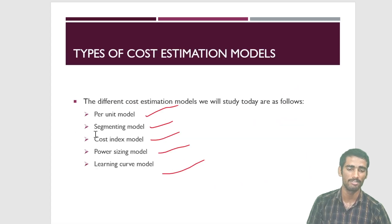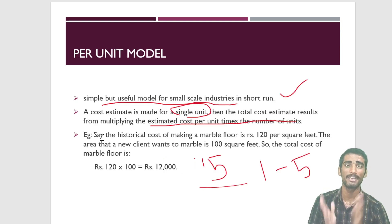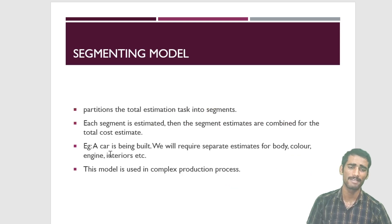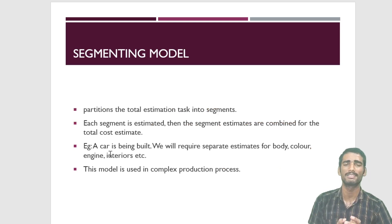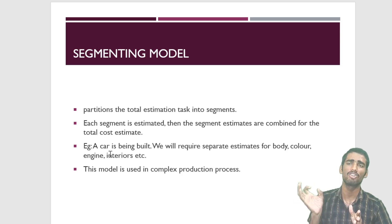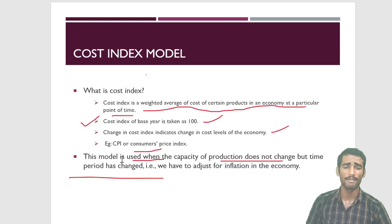There are five types of cost estimation models: per unit, segmenting, cost index, power sizing, and learning curve. The per unit model is similar to the unitary method — find the value of one unit and multiply by the number of units. In the segmenting model, a complete project is divided into segments — like the car industry example where making tires, seats, and engines are separate segments — cost of each segment is calculated and then combined.